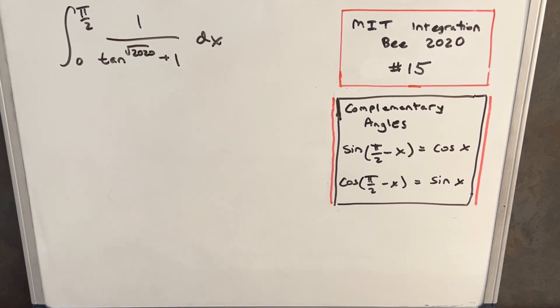Hey, we have another problem on the board from the MIT Integration Bee 2020. This is problem number 15. We have an integral from pi over 2 to 0, 1 over tan squared to the 20th, x to the 20th plus 1 dx.